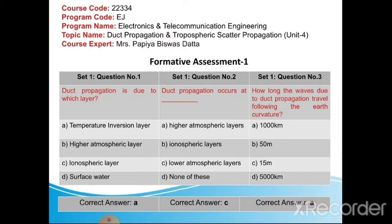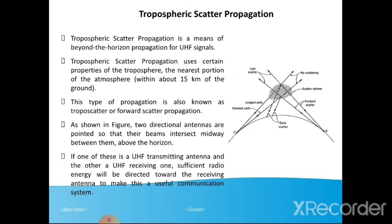Now we will talk about tropospheric scatter propagation. Tropospheric scatter propagation is a means of beyond-the-horizon propagation for UHF signals. It uses certain properties of the troposphere, the nearest portion of the atmosphere within about 15 km of the ground. Two directional antennas are pointed so that their beams intersect midway between them above the horizon. If one is a UHF transmitting antenna and the other a UHF receiving antenna, sufficient radiated energy will be directed towards the receiving antenna to make this a useful communication system.